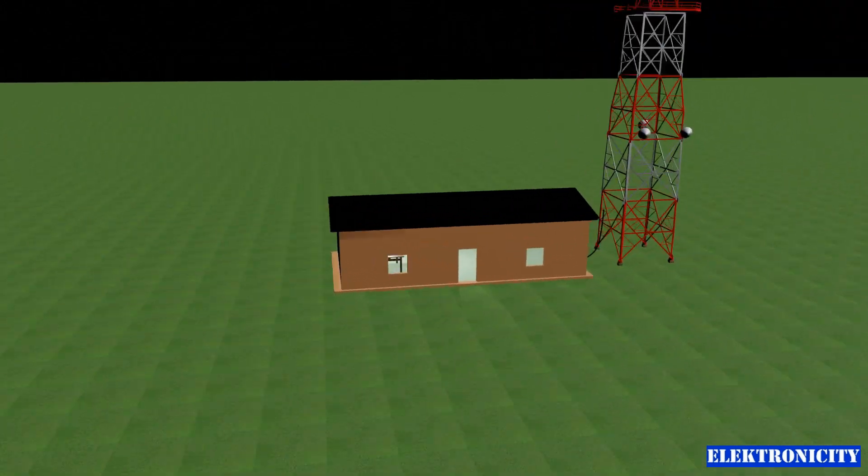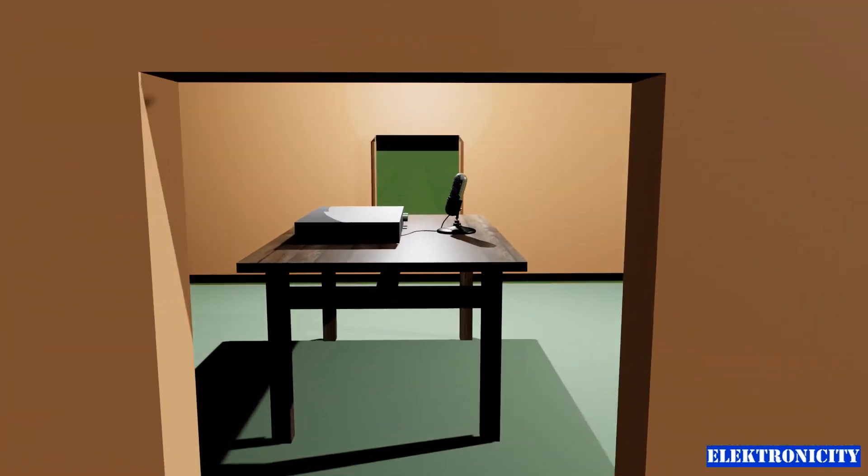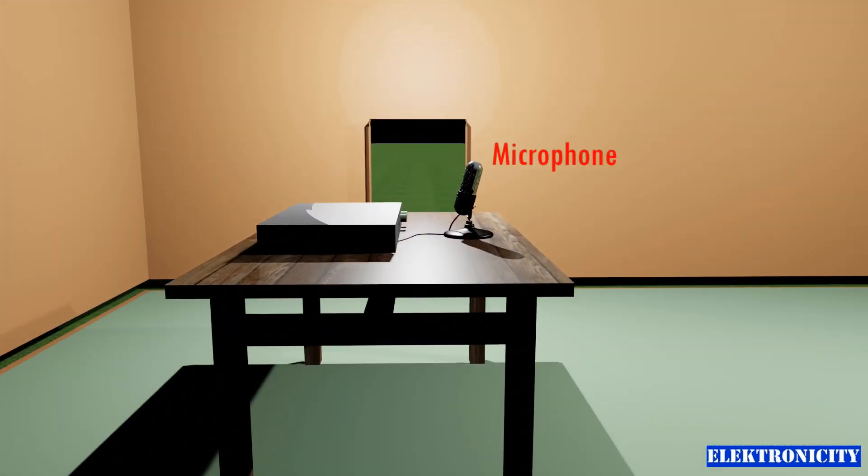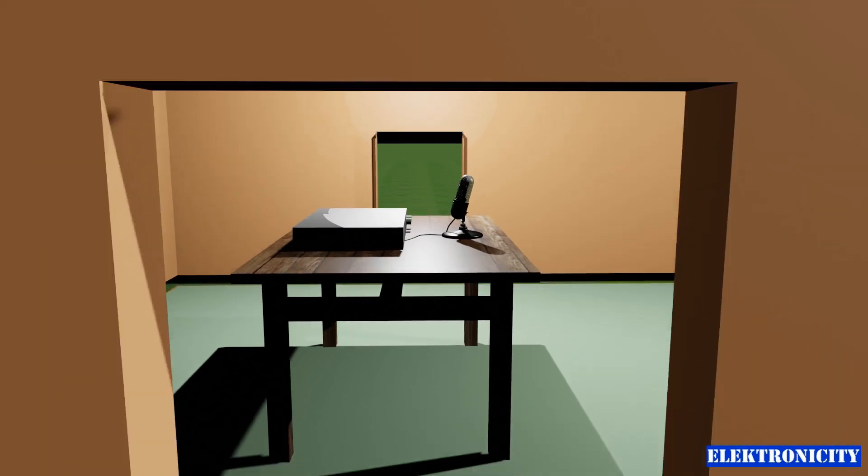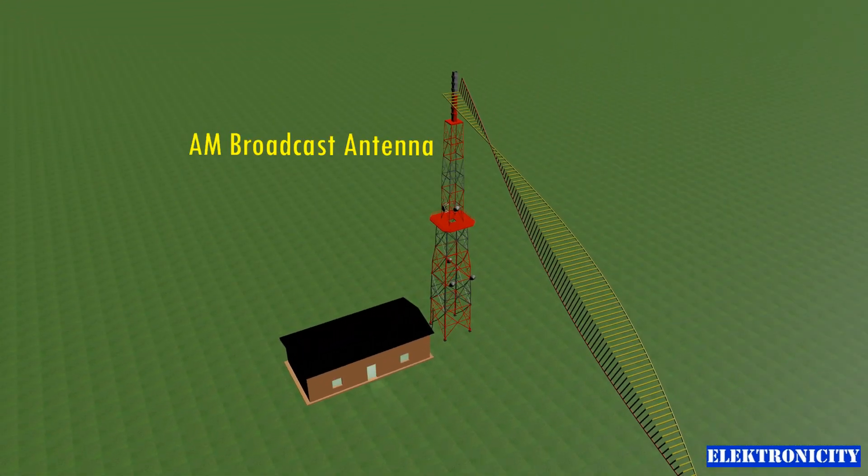The process begins at a radio station where a microphone converts sound waves from humans into electrical signals. These signals are then processed by an AM transmitter and sent to an AM broadcast antenna.